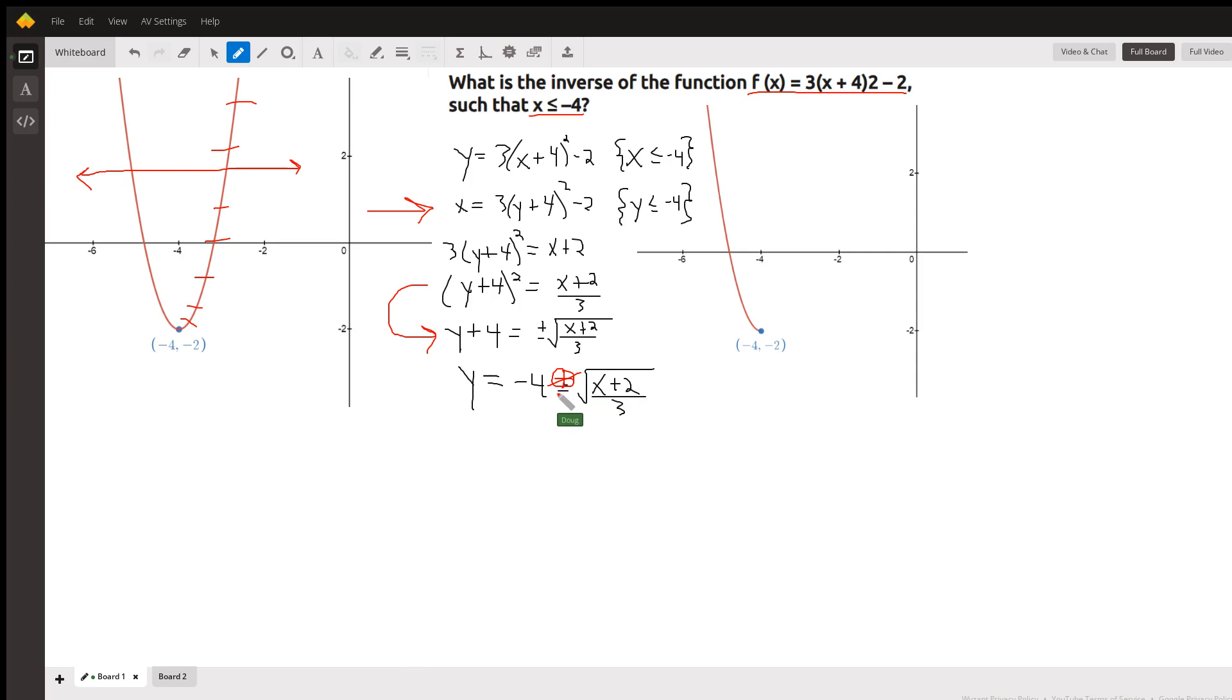But if I use the minus sign, we will have a y value less than negative 4. By the way, notice that the domain of the inverse function is x has to be greater than or equal to negative 2. Otherwise, we'd be taking the square root of a negative number.